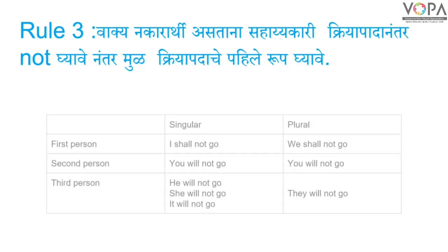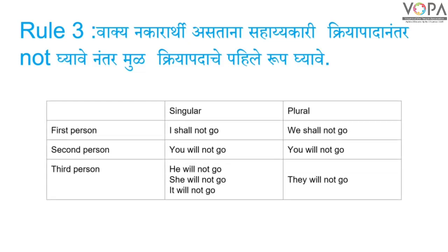For example, negative sentences: I shall not go, we shall not go, you will not go, he will not go, she will not go, it will not go, they will not go.